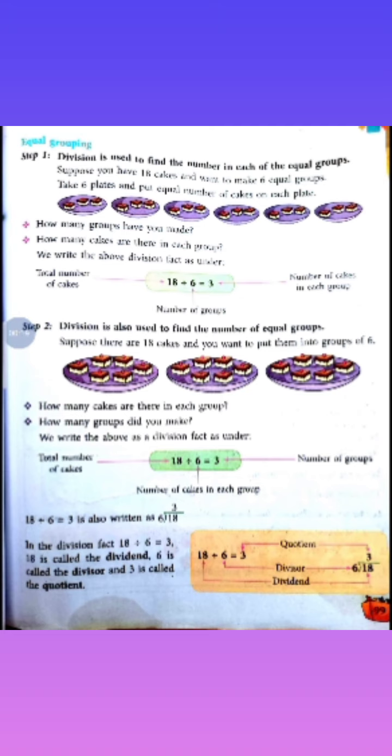Suppose there are 18 cakes and you want to put them into groups of 6. Suppose ki aapke paas 18 cakes hain aur aap inhe 6 cakes ke group mein rakhna chahte hain. So firstly, hum 3 plates lenge aur in 3 plates mein 6-6 cakes rakhenge. Toh hum dekhte hain ki agar hum cake ko 6 ke group mein rakh rahe hain, toh yahan pe kitne plates hue? 1, 2, and 3.